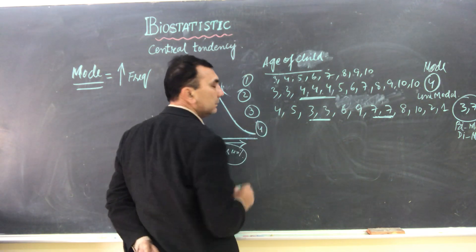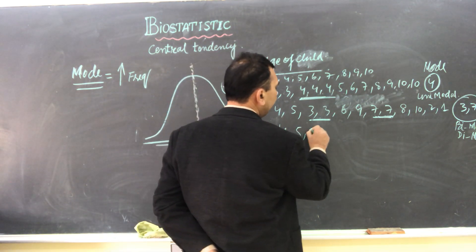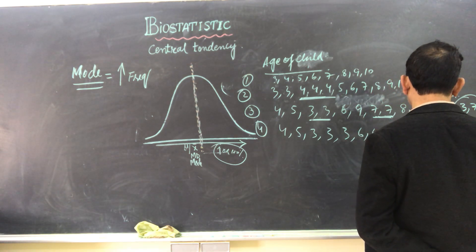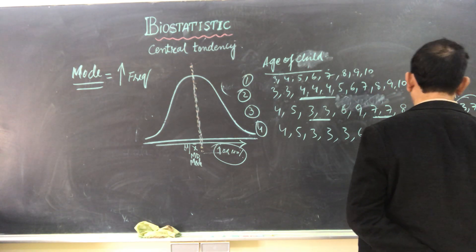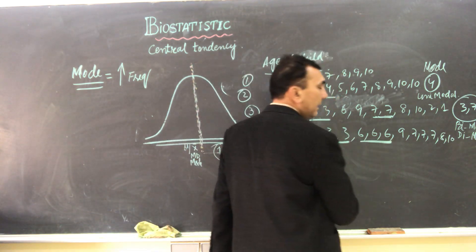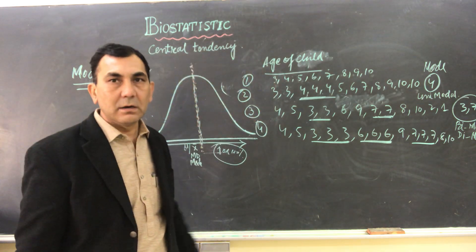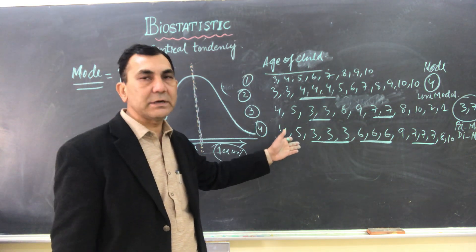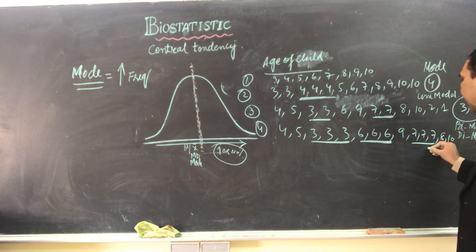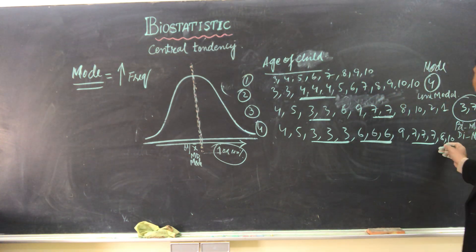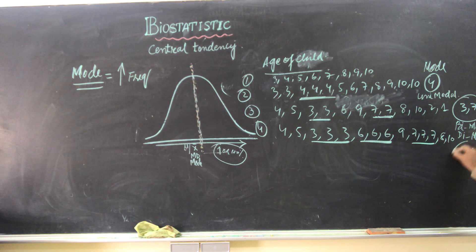In the fourth data set: 4, 5, 3, 3, 3, 6, 6, 6, 9, 7, 7, 7, 8, 10. Here 3 appears 3 times, 6 appears 3 times, and 7 also appears 3 times — all with the equal highest frequency of 3. So 3, 6, and 7 are all modes. These are called trimodal — three modes are present in the data set.